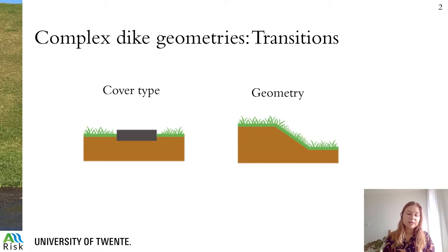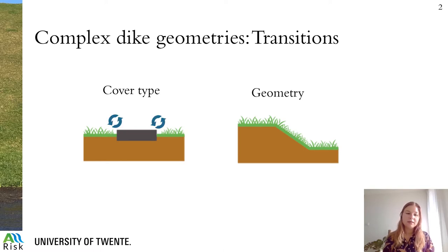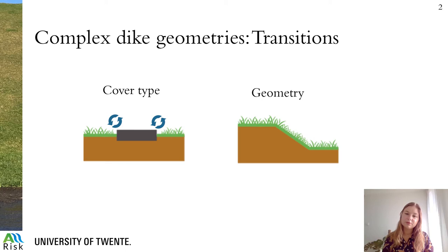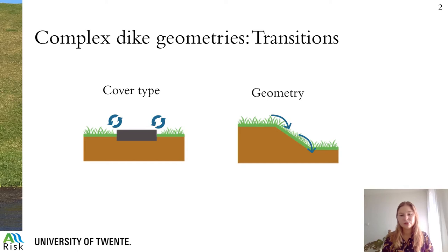It is important to study transitions because they can influence the hydraulic load and thereby dike cover erosion. An example of a transition in cover type is a road on top of the dike crest, shown in the figure to the left, where the cover type changes from grass to asphalt and back to grass again. These changes in bed roughness can lead to additional turbulence, increasing the hydraulic load at these transitions. Even the simplest dike geometries have a transition in geometry, for example the transition from the crest to the slope and from slope to a horizontal plane at the inner toe. At the crest-to-slope transition, the wave can separate from the dike cover and reattach on the upper slope, creating an additional load due to wave impact. At the inner toe, the water still wants to move downwards because of gravity, which can increase the load by jet impact.